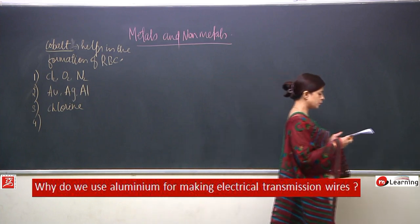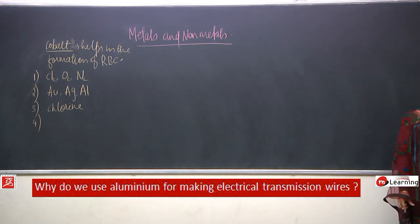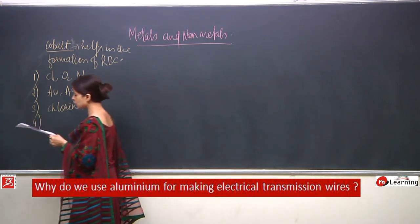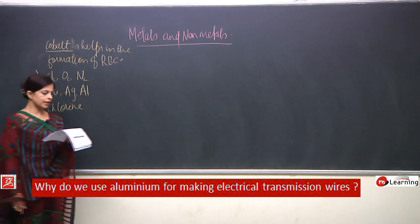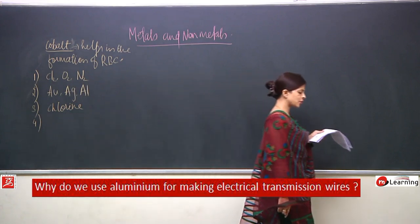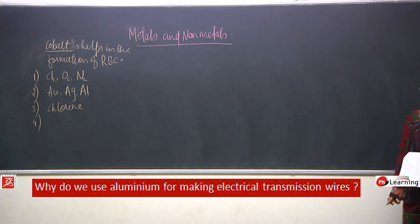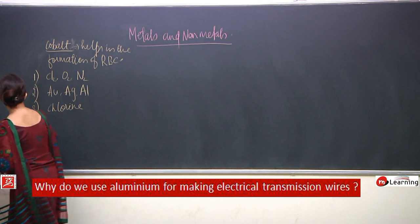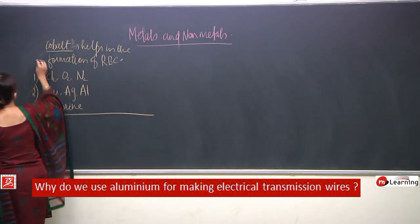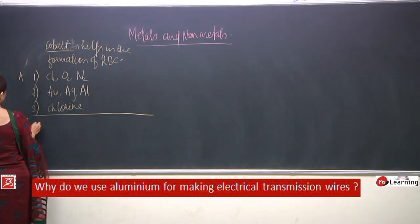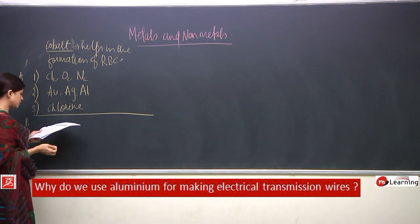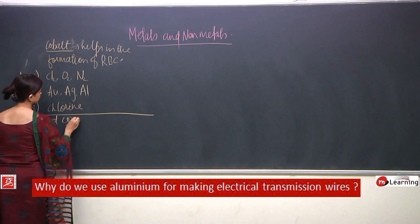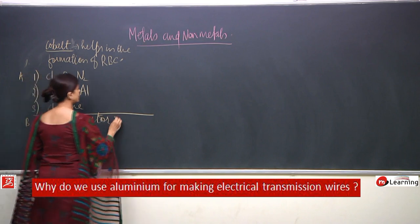Moving to short answer type questions. Why do we use aluminium for making electrical transmission wires? The simple reason is that aluminium is a good conductor of electricity and it is ductile.